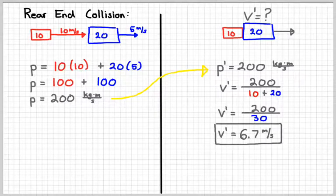And that would give me something like 6.7 m per second. We've got a positive answer that tells me that they're going to the right, just like we probably would have guessed. So in this situation, the blue object speeds up when it gets rear-ended from behind. The red object slows down.